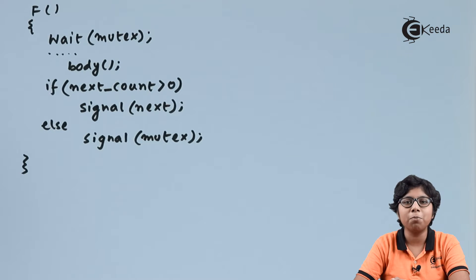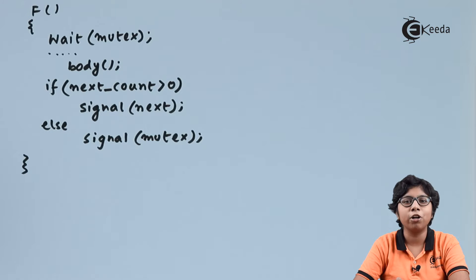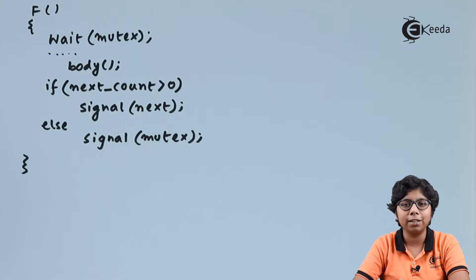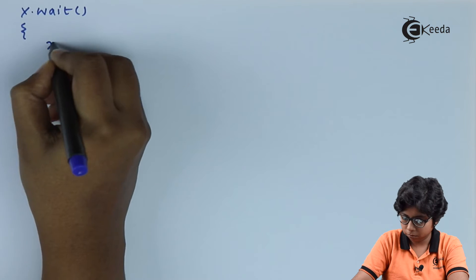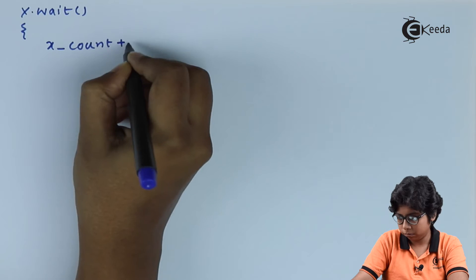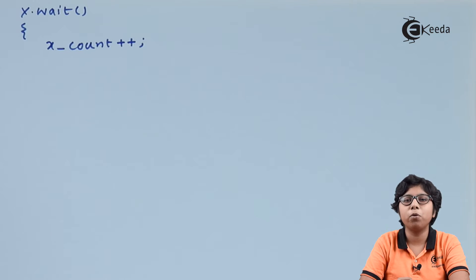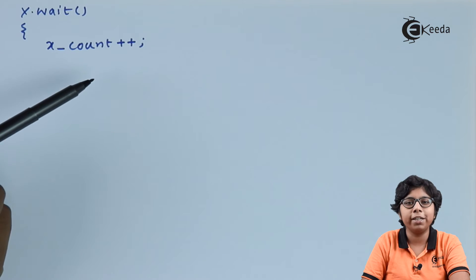In this way we can also implement condition variables attached to a monitor. Suppose a monitor has a condition variable x — attached to it we have two semaphores x_sem, and one variable x_count. Both x_sem and x_count are first initialized to zero.